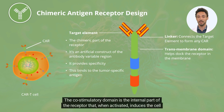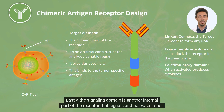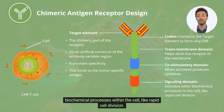The co-stimulatory domain is the internal part of the receptor that, when activated, induces the cell to make cytokines. Lastly, the signaling domain is another internal part of the receptor that signals and activates other biochemical processes within the cell, like rapid cell division.